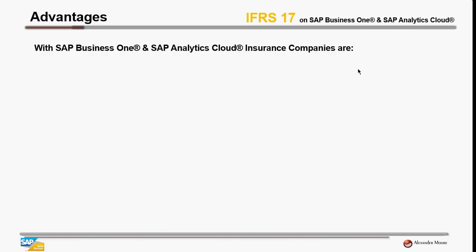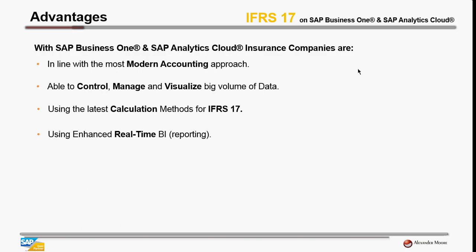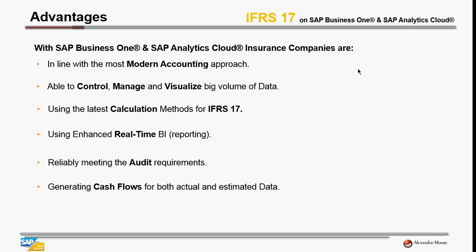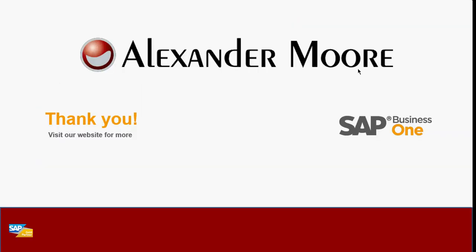Overall, with SAP Business One and SAP Analytics Cloud, insurance companies are in line with the most modern accounting approach — able to control, manage, and visualize big volumes of data using the latest calculation methods for IFRS 17, enhanced real-time BI, reliably meeting audit requirements, generating cash flows for both actual and estimated data, and building a strategic approach based on created scenarios. Thank you very much for your attention. You can visit our website for more information. Goodbye.